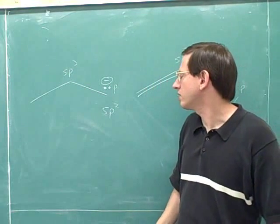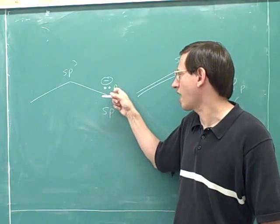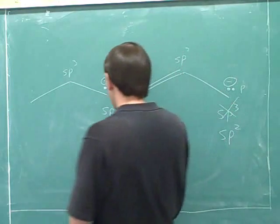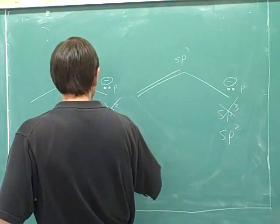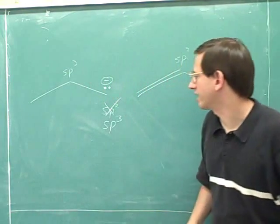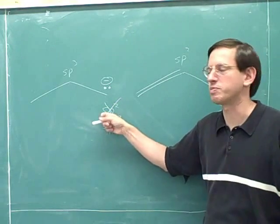So again, it wouldn't do this carbon any good to be sp2 hybridized. It wouldn't do it any good to have a p orbital, because there would be nothing for the p orbital to overlap with on this carbon over here. That's why again, in reality, this carbon is actually sp3, not sp2.